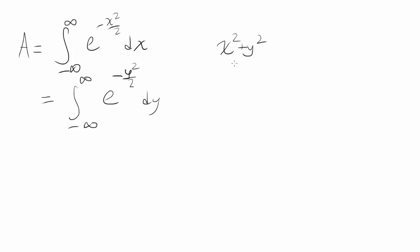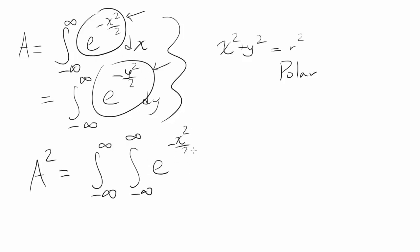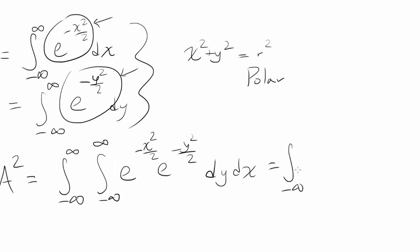If we can get x squared plus y squared, we can convert to polar by substituting r squared. We can achieve this by multiplying the two expressions together. So A squared equals the integral from negative infinity to infinity — now multiplying both integrals. When one integral is a function of x and the other is a function of y, you can combine them into a double integral of their product. So A squared equals the double integral from negative infinity to infinity of e to the negative one-half times (x squared plus y squared) dy dx, using the exponent addition property.